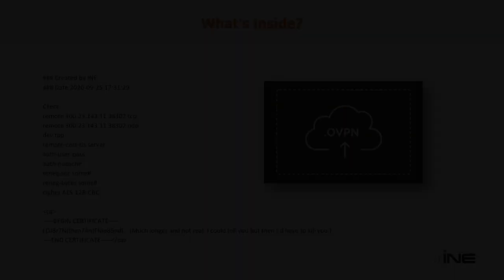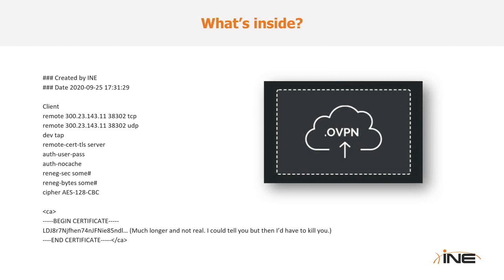I do have a sample .ovpn file for you to look at — it's really just a simple text file with a bunch of stuff. At the top it starts with some comments, very much like code, which are ignored by the application and are there for extra information. Then it contains the information the VPN client needs to connect to the remote VPN server, like IP address, protocol, and other parameters so they know how to properly communicate. There's also security information like what type of encryption to use, and at the bottom, a digital certificate for authentication. The best thing is you don't have to know what any of this means — you just have to know that this file exists. This file is created by your network admin, or in the case of our labs, it's automatically created for you when you start the lab.